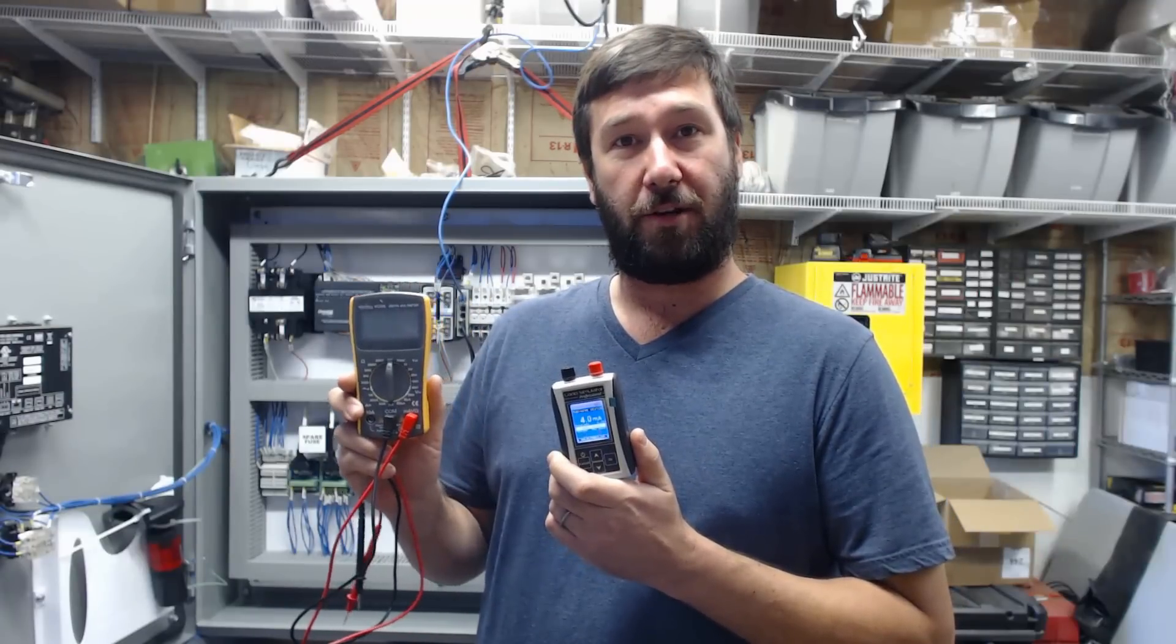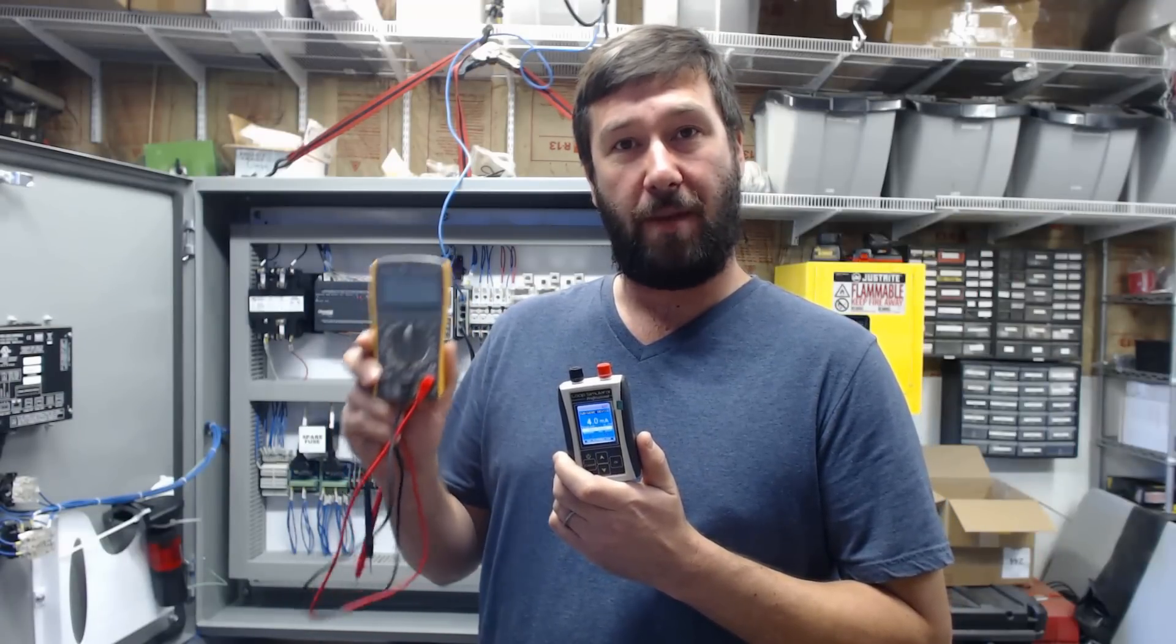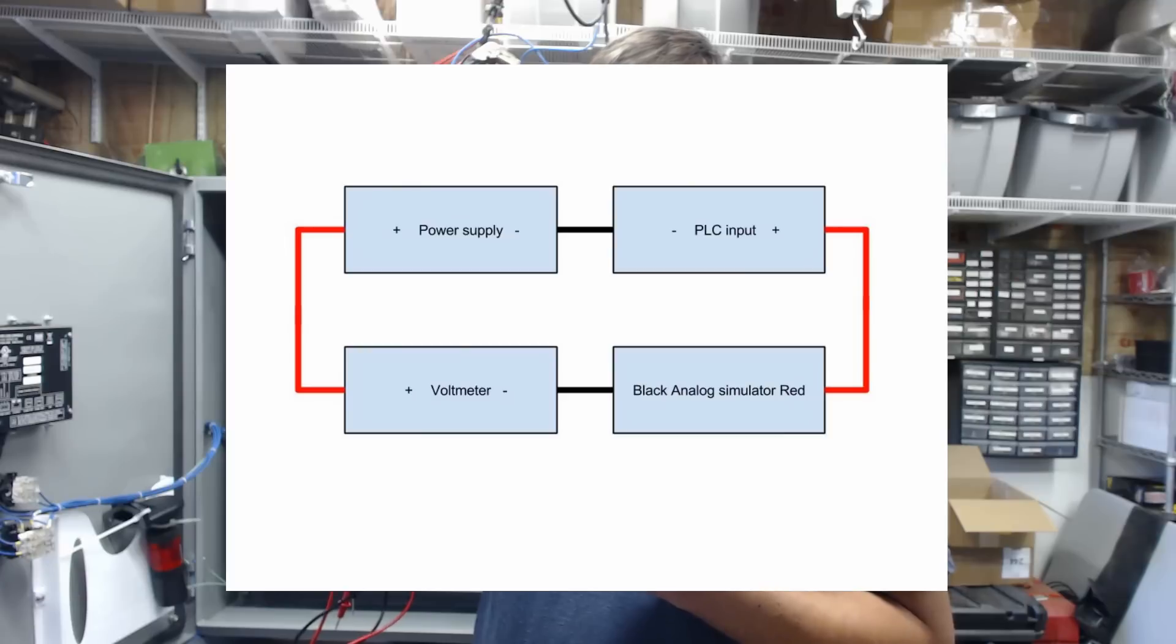To make our example a little clearer, we're also going to put a voltmeter in line with it that we can measure a milliamp signal. Here's the circuit diagram that we are connecting with today.